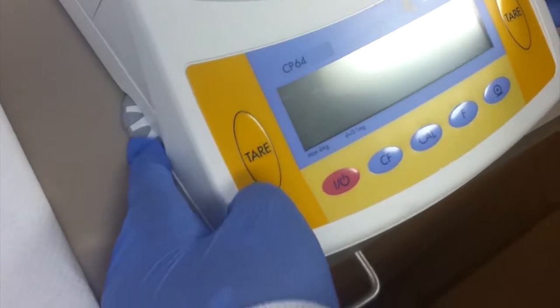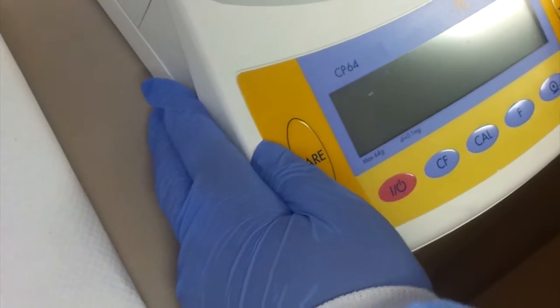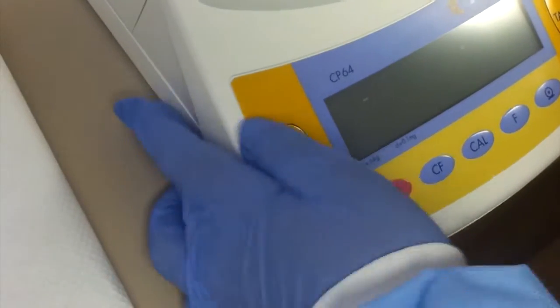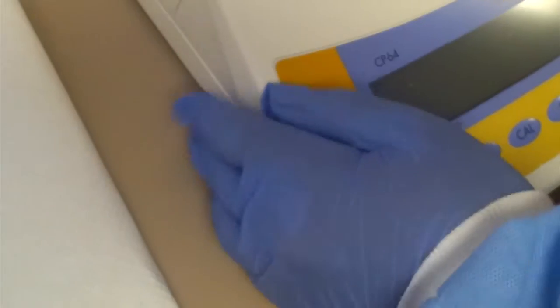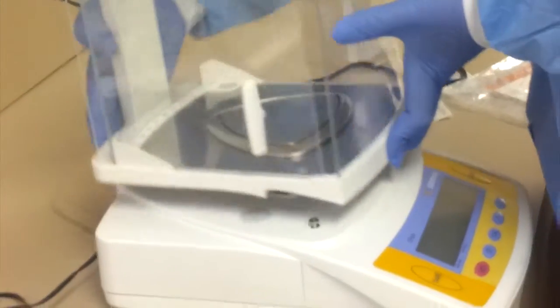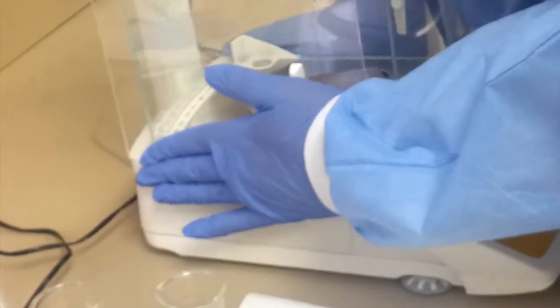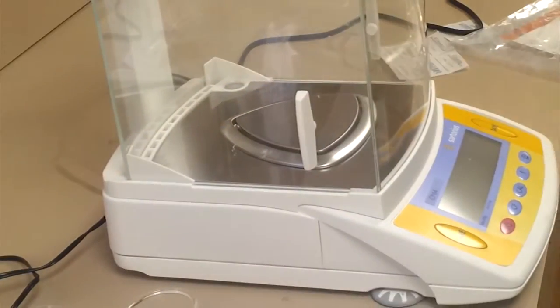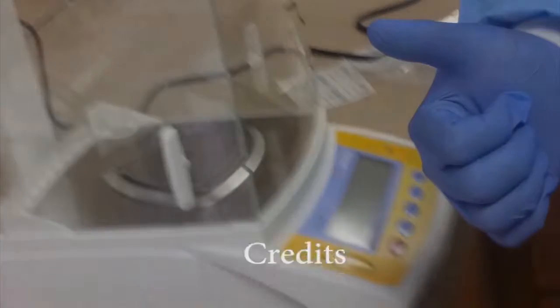Now that our balance is corrected and leveled, we will just put this cage back on and attach the power. That's it! Thanks for watching, and I hope this tutorial showed you how to correctly use a laboratory scale.